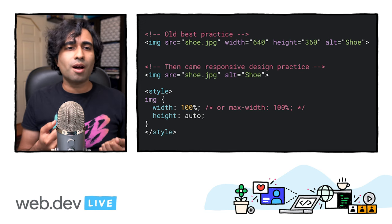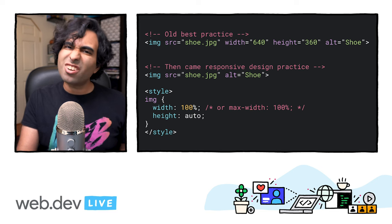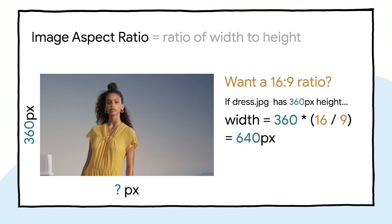A lot of us got used to our text suddenly popping down the screen, which wasn't a great user experience. This is where aspect ratio comes in. The aspect ratio of an image is the ratio of its width to its height — commonly expressed as two numbers separated by a colon, like 16:9 or 4:3. For an x:y aspect ratio, the image is x units wide and y units tall. If we know one dimension, the other can be determined: for a 16:9 ratio with a 360px height, the width is 360 × (16/9) = 640px.